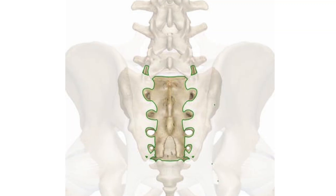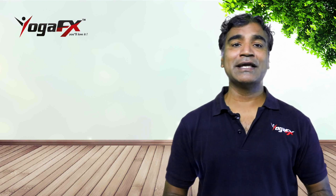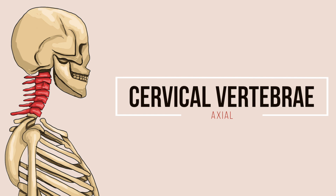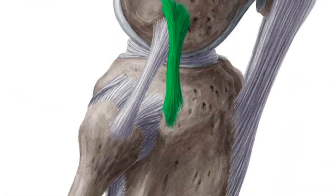The vertebral column is made of 26 bones. The first 24 are vertebrae, followed by the sacrum and the coccyx — also known as the tailbone. The 24 vertebrae are further divided into regions. There are seven cervical vertebrae, labeled C1 to C7, forming the cervical spine from the base of the skull down to the shoulders. They protect the spinal cord and work with muscles, tendons, ligaments, and joints to provide support, structure, and flexibility.